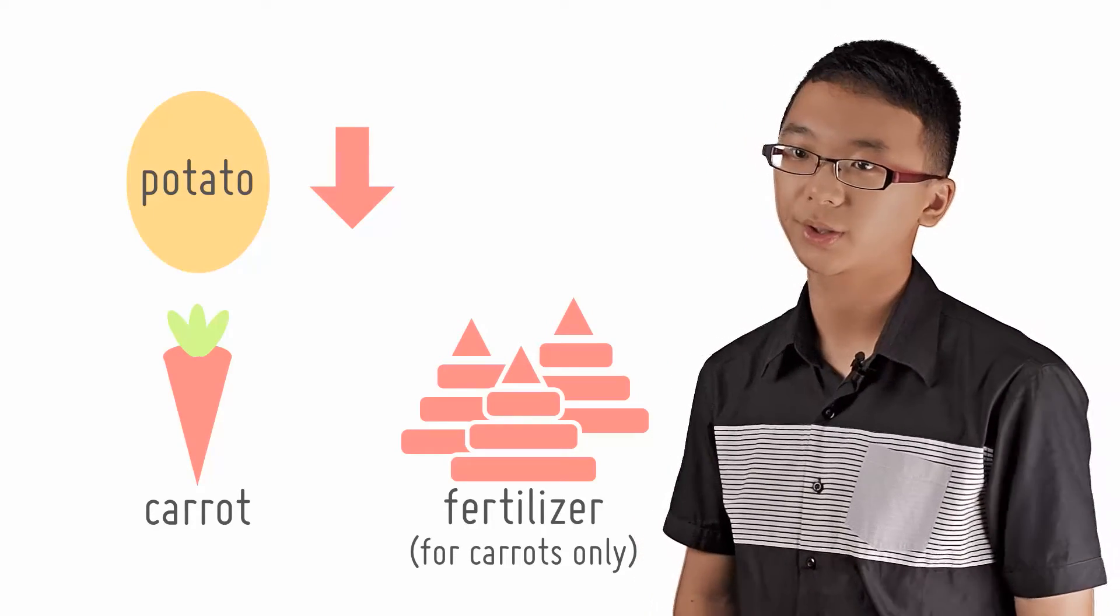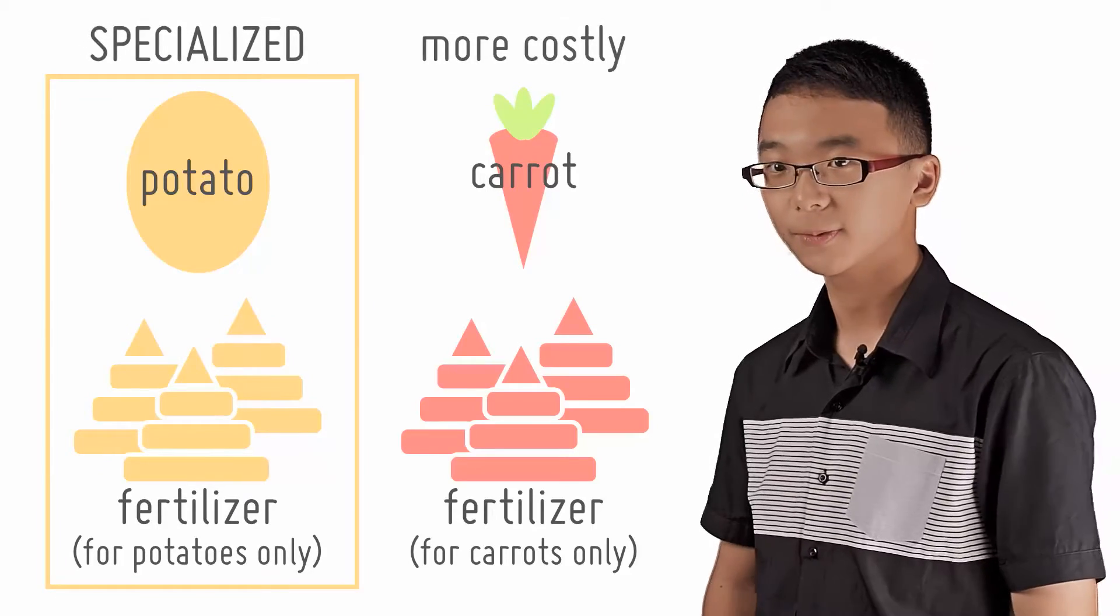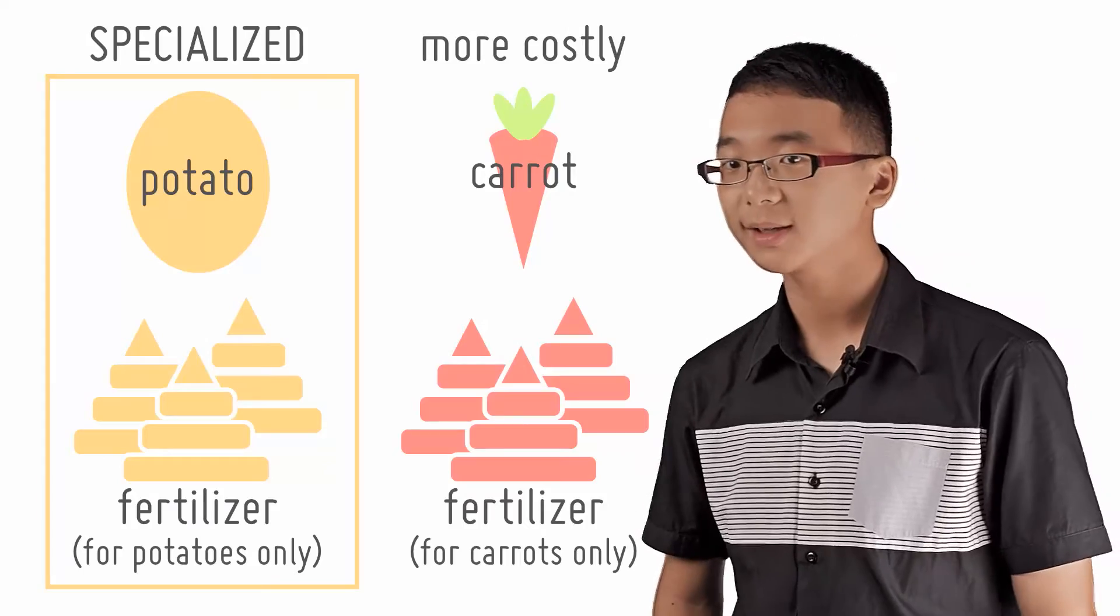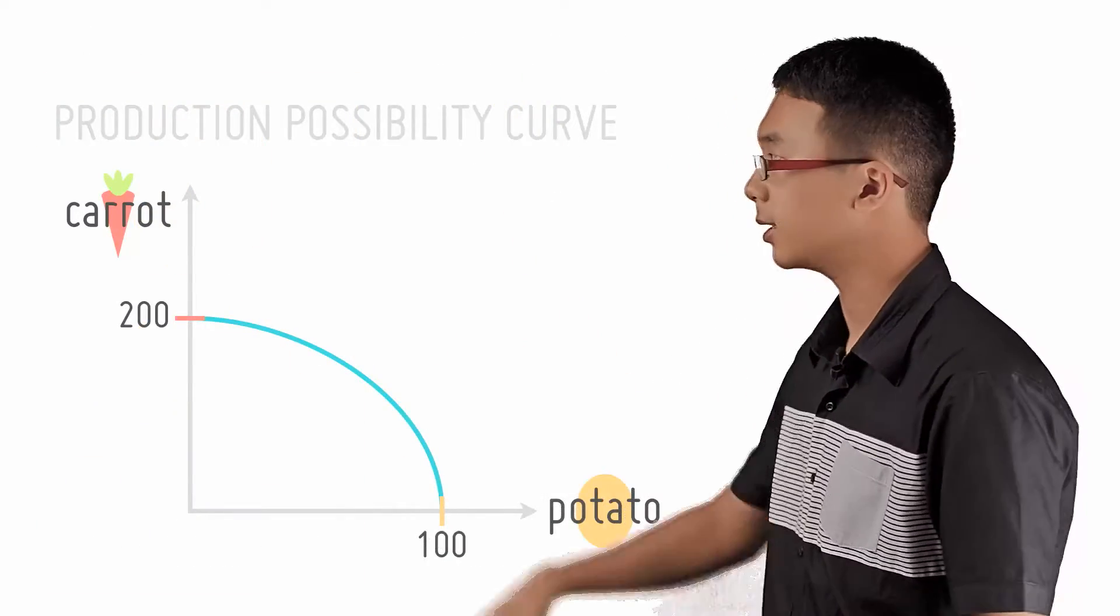In short, because your resources are, in a way, specialized at producing potatoes, producing carrots is proportionally more costly. The main takeaway in this checkpoint to note is that the PPC is curved outwards because of the law of increasing opportunity cost.